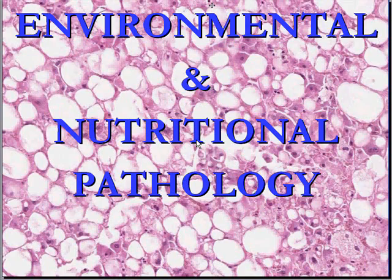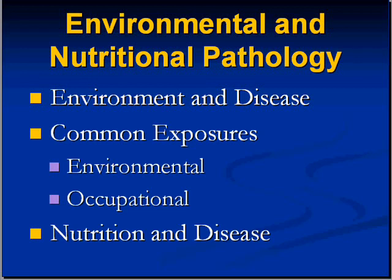We'll be talking about environment, toxins, and nutrition in this chapter. We'll be talking about how substances in the environment, interacting with our cells and bodies, cause diseases. These exposures can be environmental or occupational — occupational being a type where certain people are exposed more than others by virtue of what they do. We're also going to get into nutrition, and in particular, deficiencies or lack of proper nutrition causing disease states.